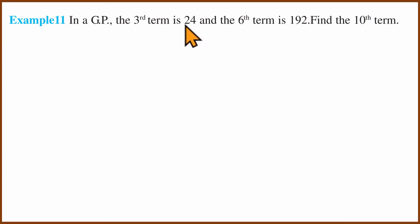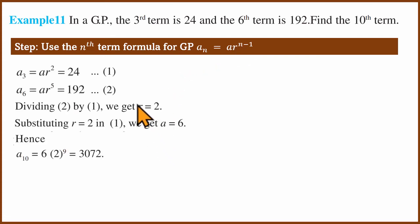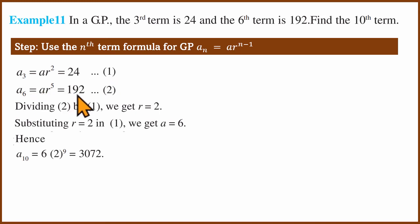Third question: the 3rd term of a GP is 24 and the 6th term is 192. Find the 10th term. We use the same formula: An equals a multiplied by r to the power n-1. The third term is a multiplied by r squared, so ar² equals 24. The sixth term gives ar to the power 5 equals 192.